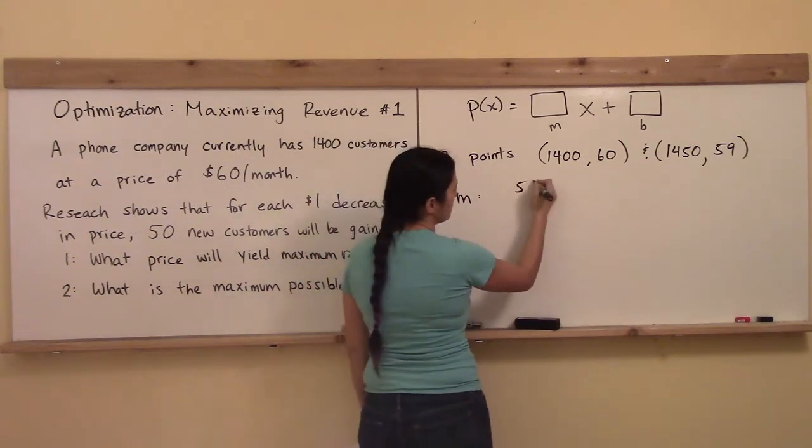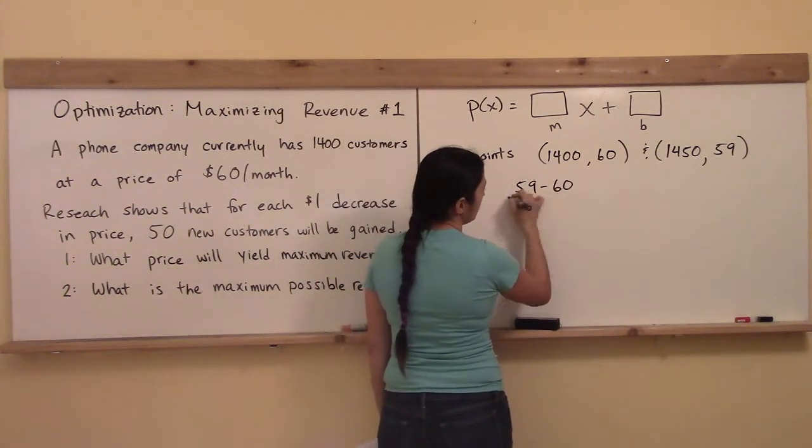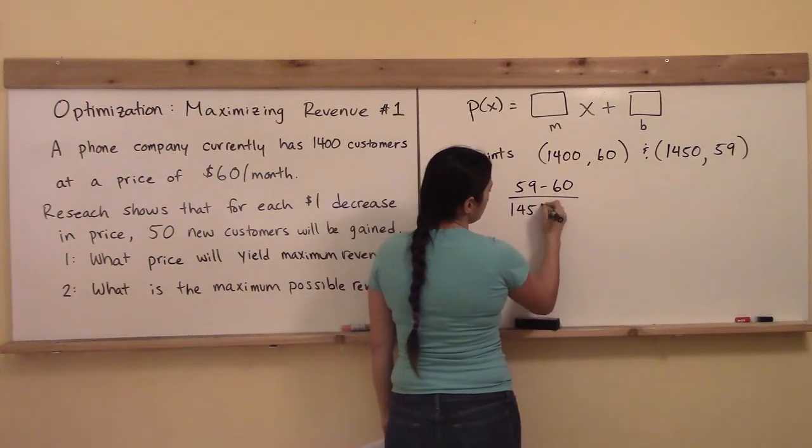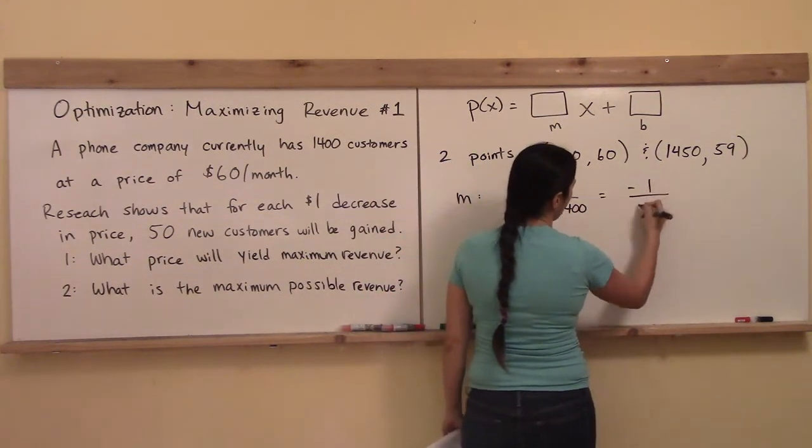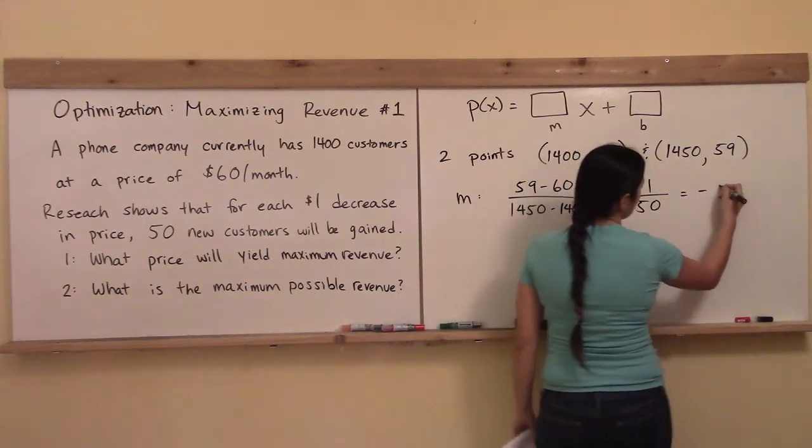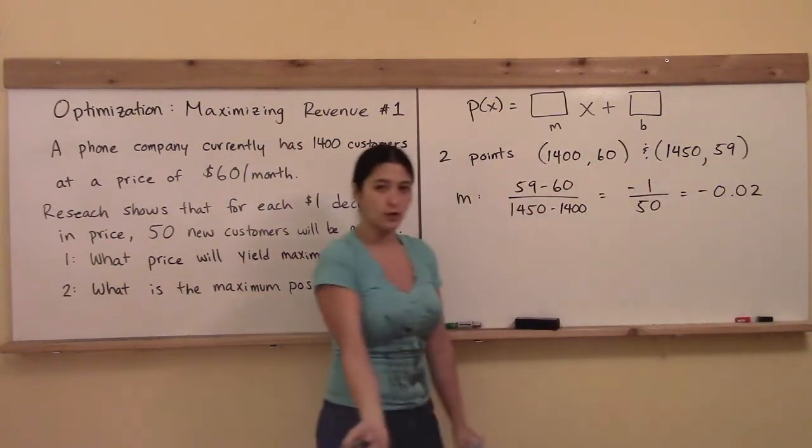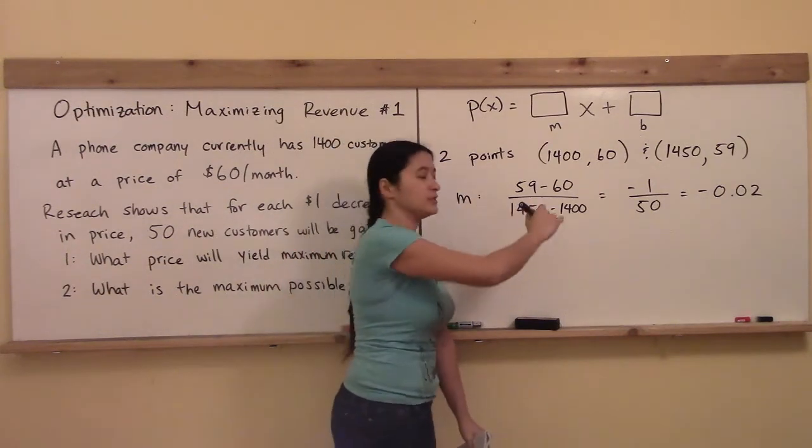The m is going to be y2 minus y1 over x2 minus x1. So that equals minus 1 over 50 and as a decimal we can put negative 0.02.